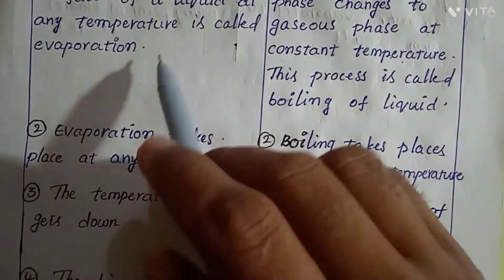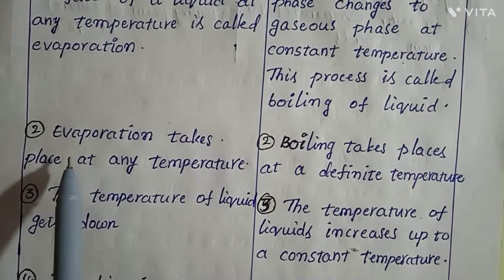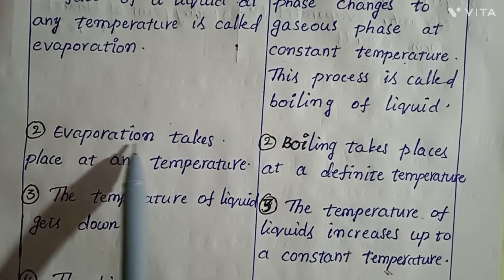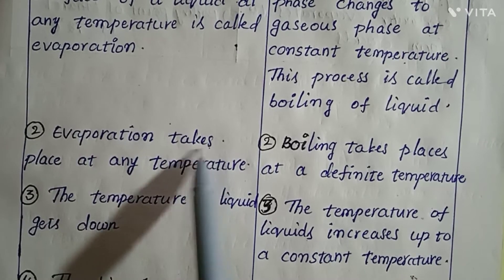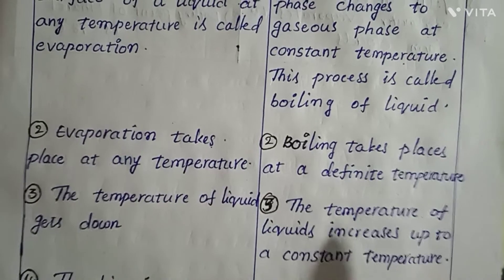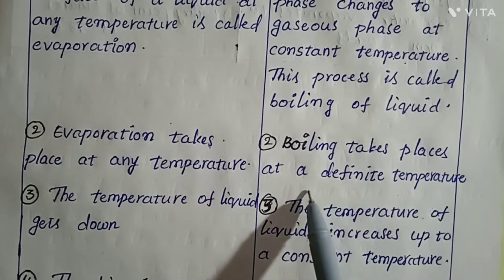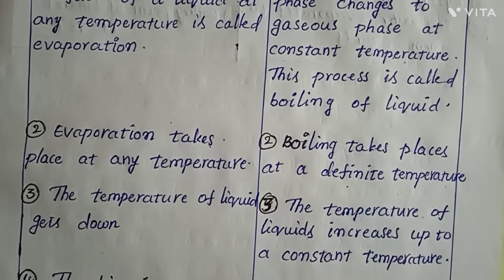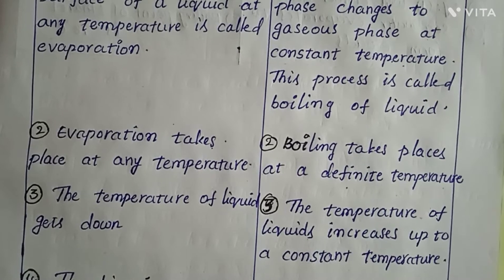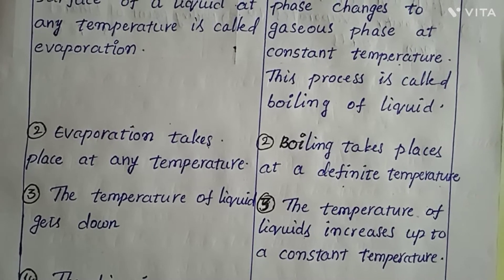Now see the second difference here. Evaporation takes place at any temperature, but whereas boiling takes place at a definite temperature. Definite means constant temperature or specific temperature.